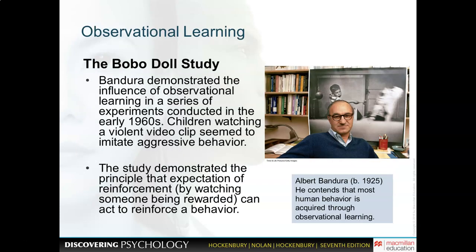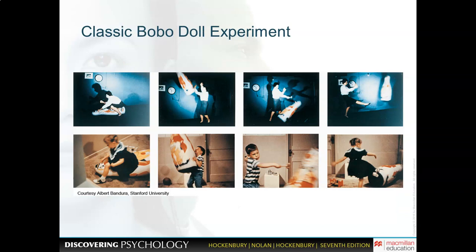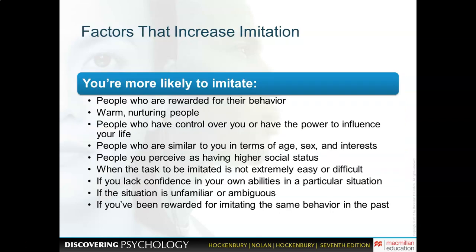Observational learning refers to learning through observing. One example is the Bobo doll experiment, in which a researcher demonstrated aggressive violent behavior toward a Bobo doll while children watched from another room. Afterward, the children were allowed in the room and demonstrated the same violent behavior — they had learned observationally. This also covers factors that make you more likely to imitate observed behavior.